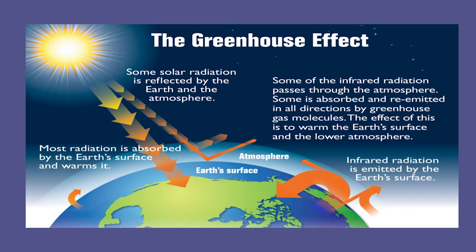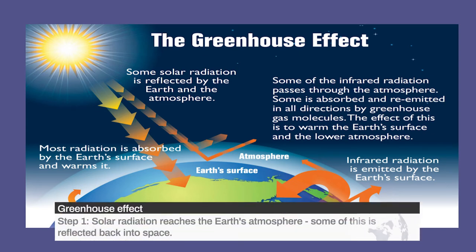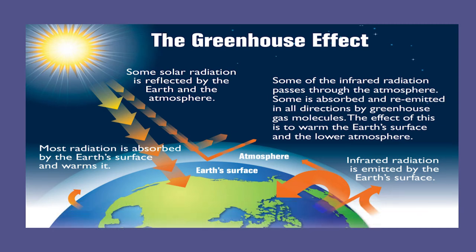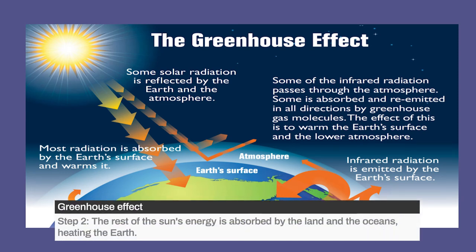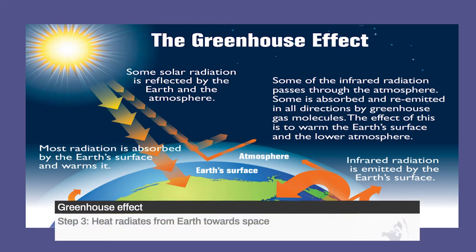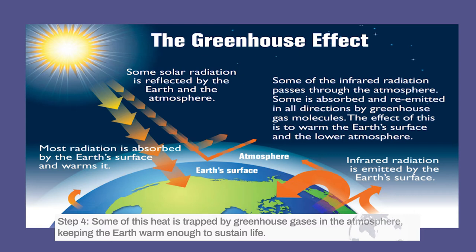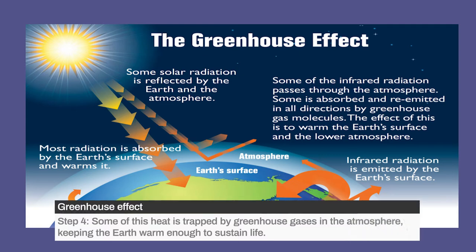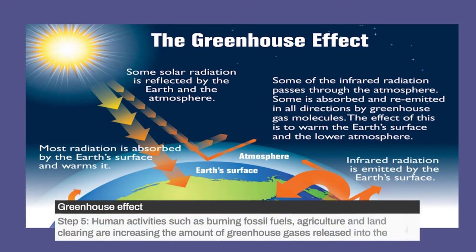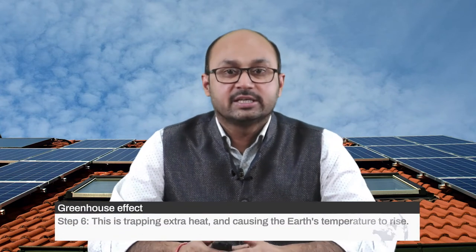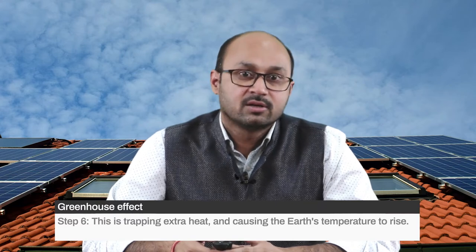There are steps showing why the greenhouse effect occurs. In step one, solar radiation reaches the earth's atmosphere and some is reflected back into space. In step two, the rest of the sun's energy is absorbed by the land and oceans. In step three, heat radiates from earth towards space. In step four, some of this heat is trapped by greenhouse gases in the atmosphere, keeping the earth warm enough to sustain life. In step five, human activities such as burning fossil fuels, agriculture, and land clearing are increasing the amount of greenhouse gases — especially carbon dioxide — released into the atmosphere. In step six, this trapped extra heat causes the temperature of the earth's atmosphere to rise.